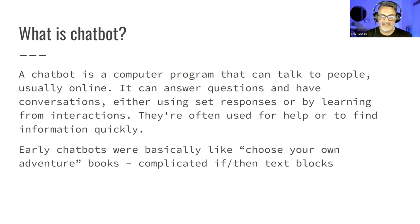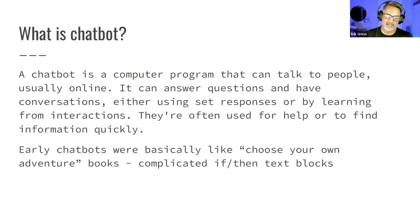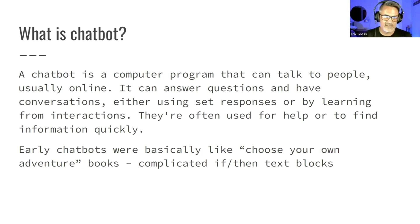So you would basically have: if this question from the user, then this response. That's really how they worked. They're a lot more complex now, and we're going to explain how they're able to be more complex. Chatbots have been around as a technology for dozens of years — it's just recently that they got a lot more capable, and we'll see why.